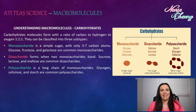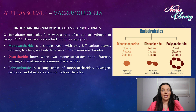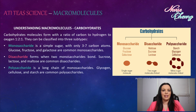Moving on to carbohydrates. Carbohydrate molecules form with a ratio of carbon to hydrogen to oxygen of one to two to one. They can be classified into three subtypes. Monosaccharides are simple sugars with only three to seven carbon atoms — that's your glucose, fructose, and galactose. Disaccharides form with two monosaccharide bonds — that's your sucrose, lactose, and maltose. Lastly, polysaccharides are long chains of monosaccharides — that's your glycogen, cellulose, and starch.